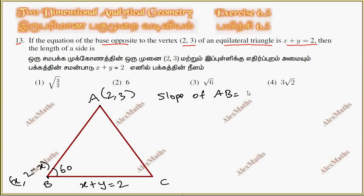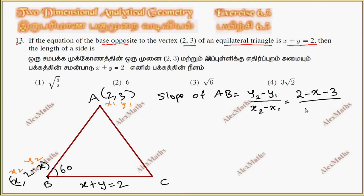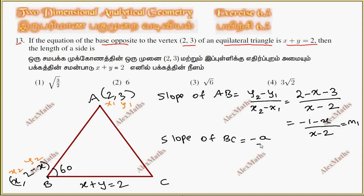Slope of AB equals y2 minus y1 by x2 minus x1. So the slope M1 comes out to minus 1. Slope of BC: minus coefficient of x by coefficient of y, which is minus 1 by 1, giving minus 1. Theta is 60 degrees.